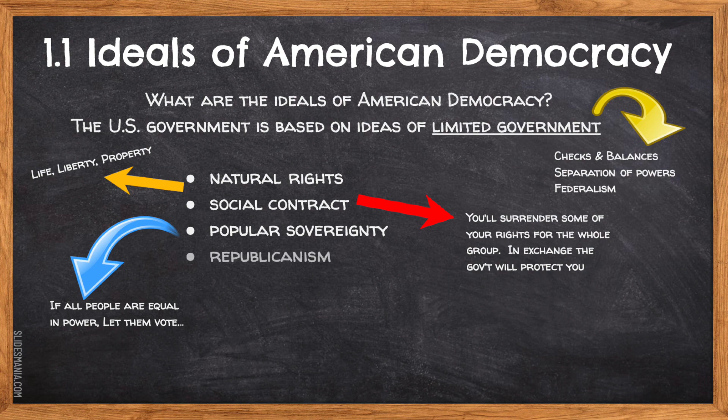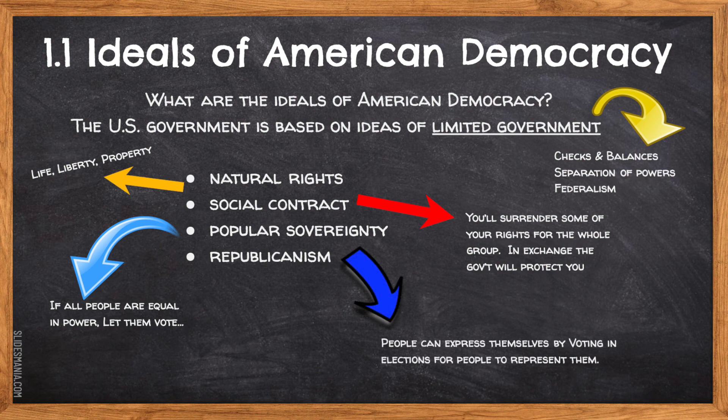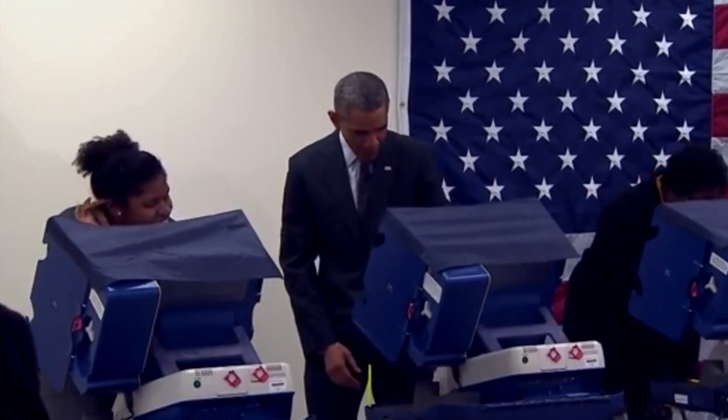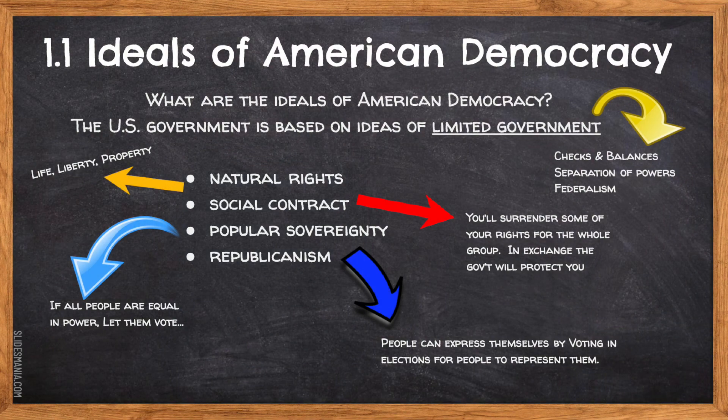Which takes us to our final ideal of American democracy: republicanism. The idea behind a republican form of government is that in a country geographically as large as the United States, the best decisions would be made when the people elect representatives to seats of government to make decisions on their behalf. And if the people were not satisfied with the job that their elected officials are doing, they can vote those individuals out of office. But ultimately, the seat of power rests with the people.